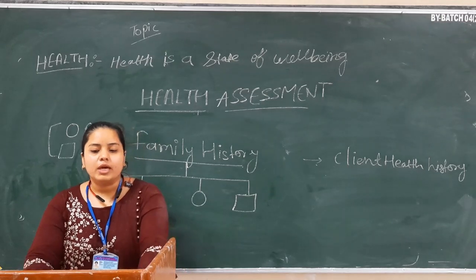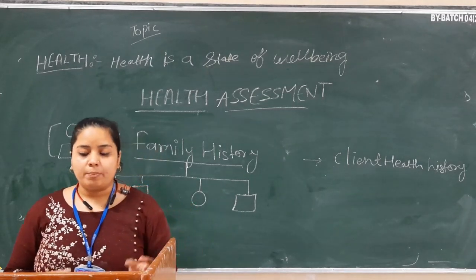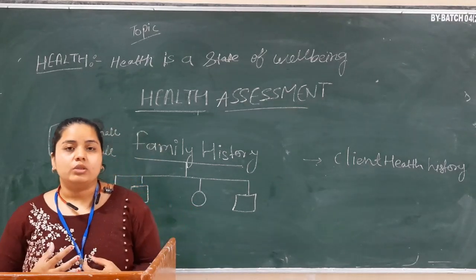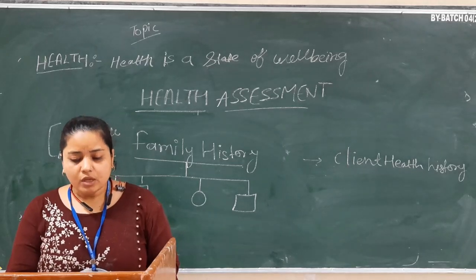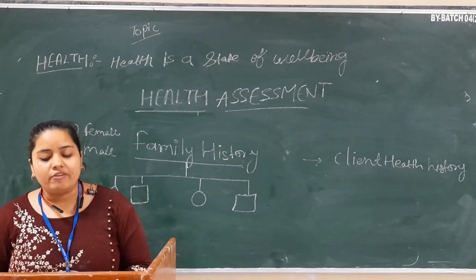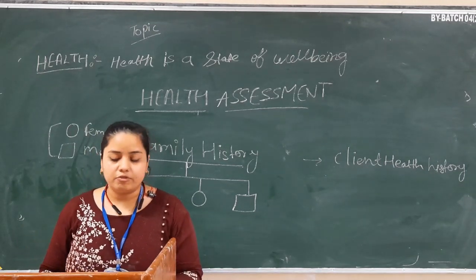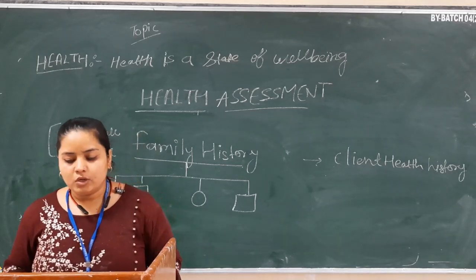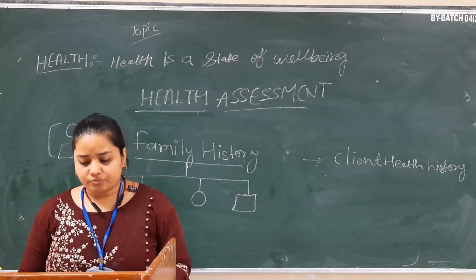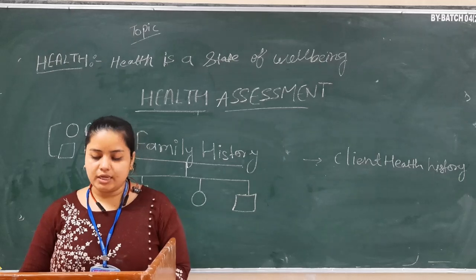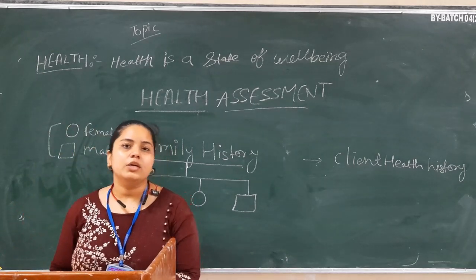The next point is psychosocial history — if the patient has a sleeping problem or resting pattern issues, we ask how many hours they sleep, their nightly pattern, meal times, and daily routine. Finally, we review the system — information is gathered system-wise to identify problems, present and past medical history, and review the body systems from head to toe. This concludes the health assessment overview. Thank you.